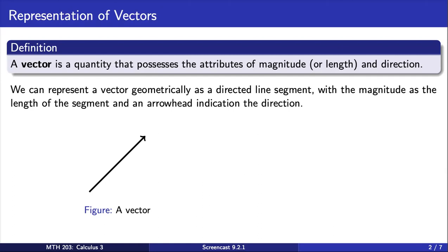According to the definition, a vector possesses the attributes of magnitude and direction. The vector's position, however, is not mentioned. Consequently, we regard any two vectors having the same magnitude and direction as equal.